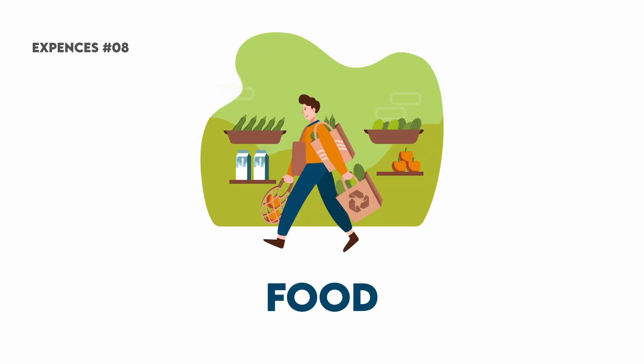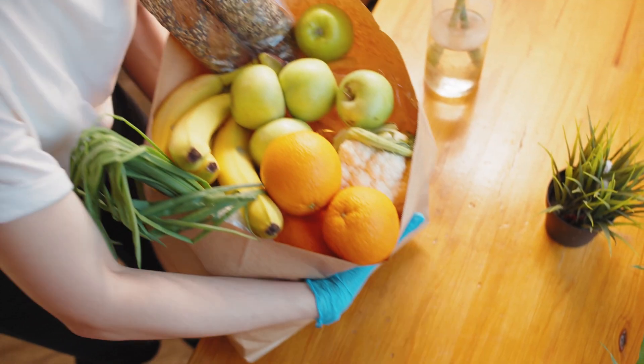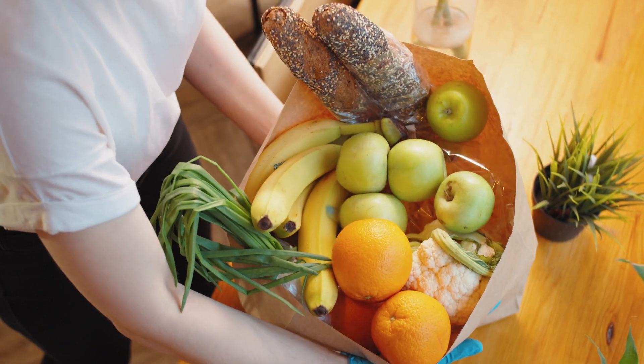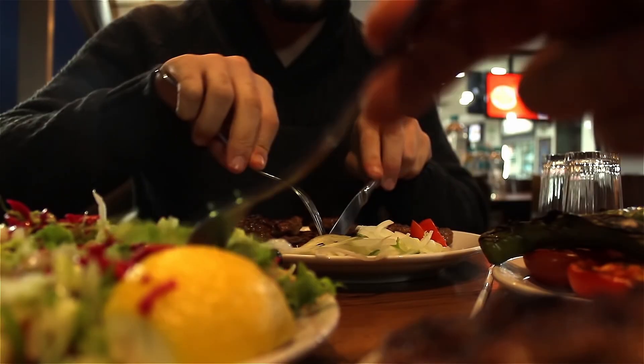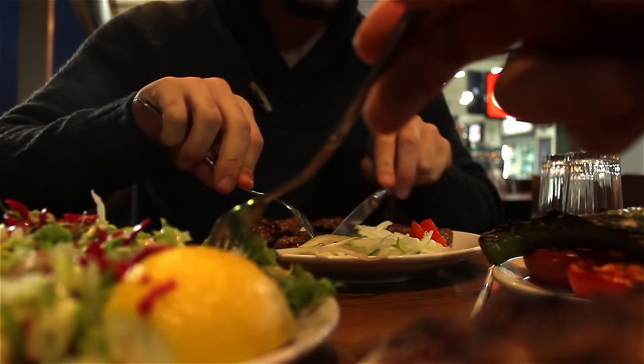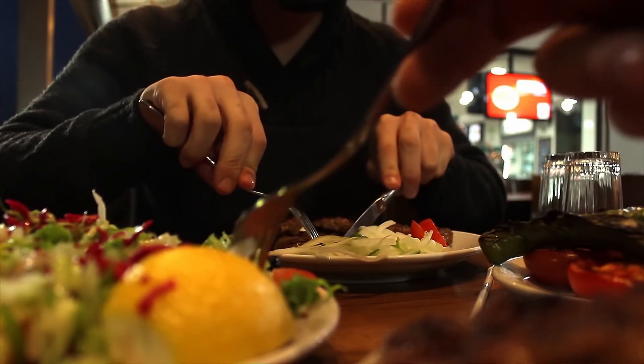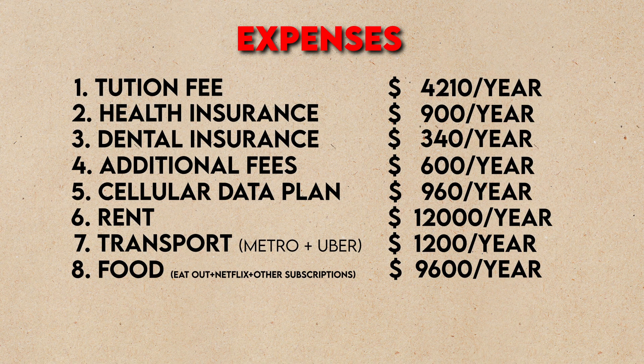Your next big expense is of course food. That includes groceries, ordering food through Uber Eats, Skip, or DoorDash, and eating out. On average, budget around $600 per person per month for food.